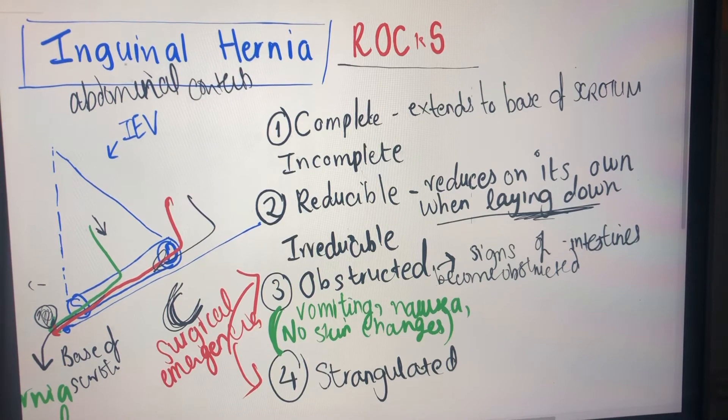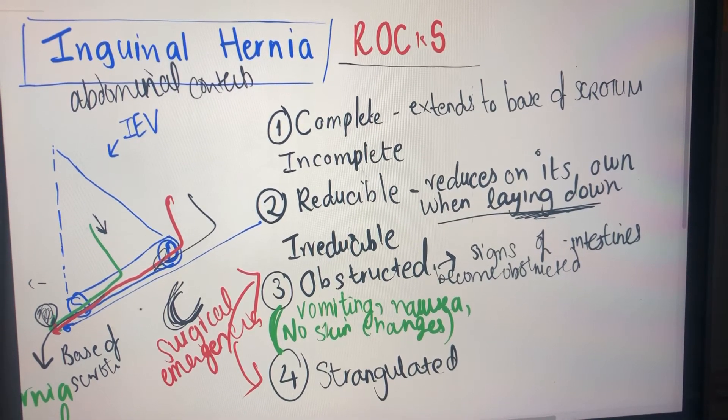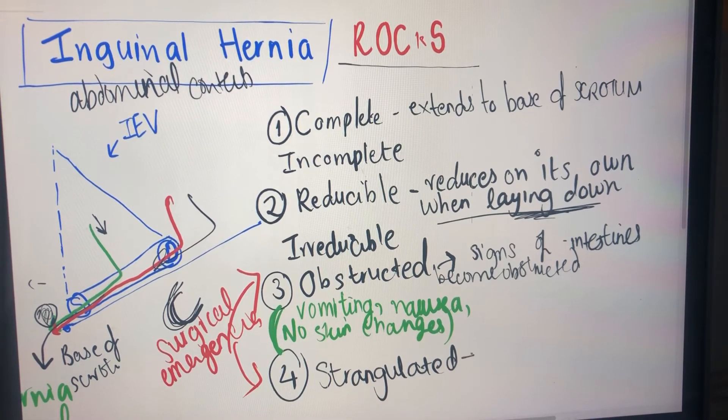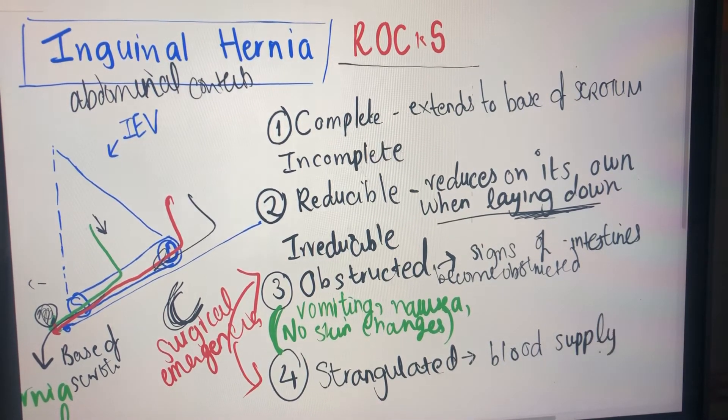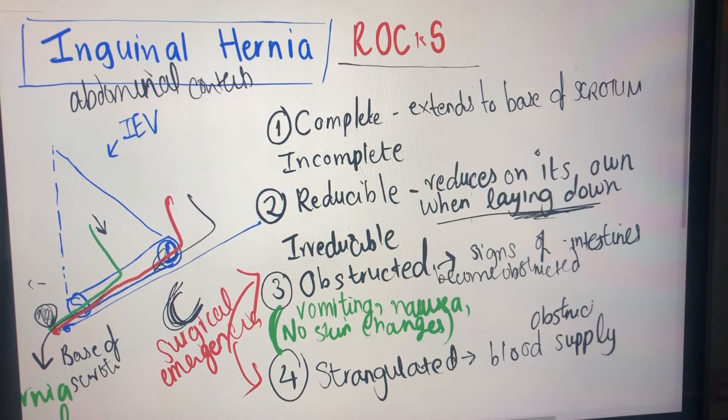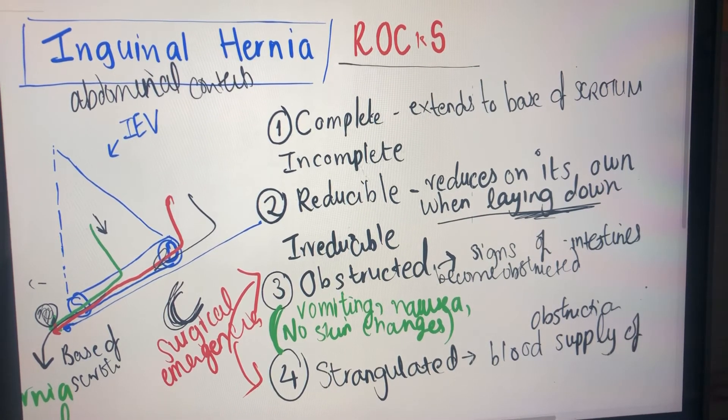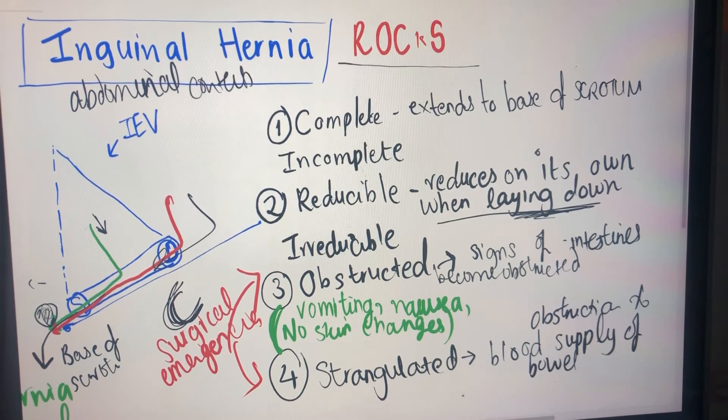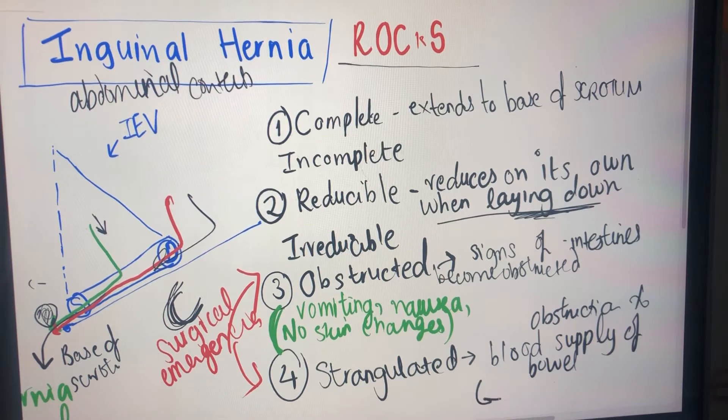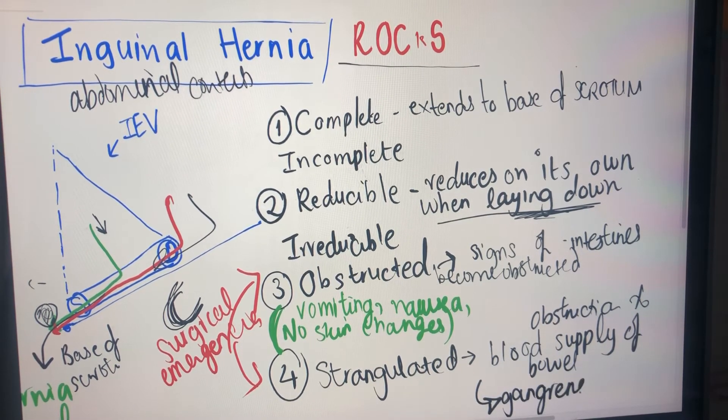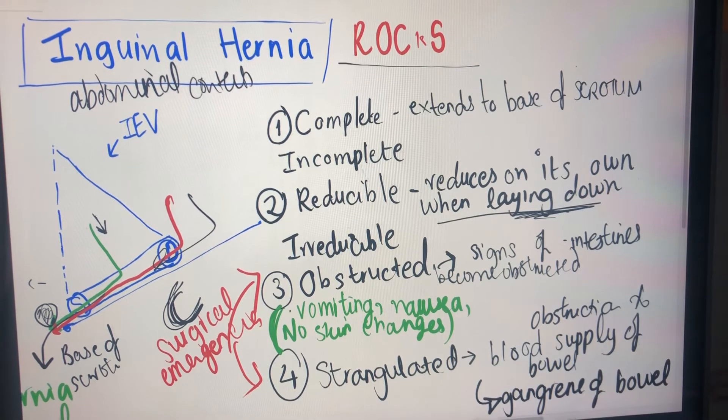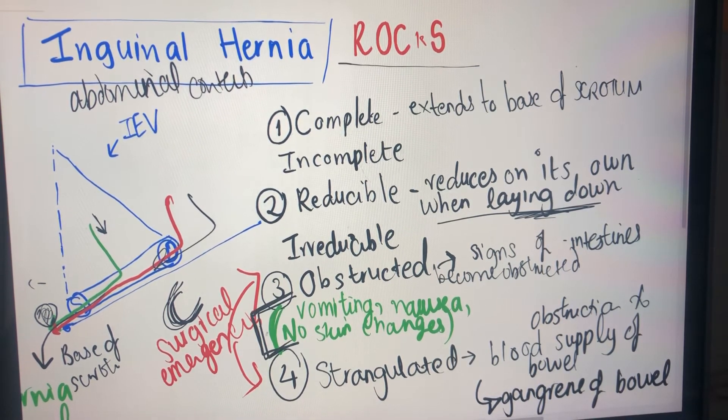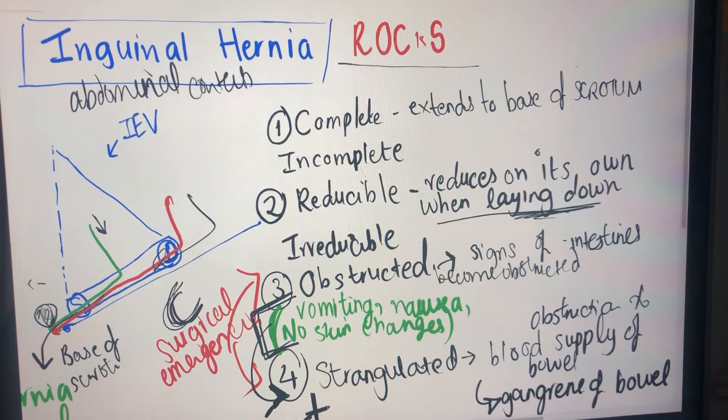So with strangulated, this means that there's something happening to the supply, strangulated for S, supply for S. So what could happen? Well, the blood supply to the bowel is being obstructed. Obstruction to blood supply of the bowel or to any of the intestines. So this can eventually cause gangrene. And in strangulated hernias, it will cause exactly the same symptoms as obstructed hernia, plus visible skin changes.